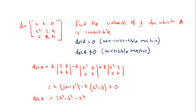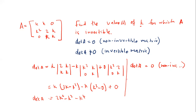We do not know the values of k that make the determinant zero or non-zero. To find them, we take the determinant of A and equate it to zero — this is for the non-invertible case. So we set −k⁴ − k³ + 2k² = 0.